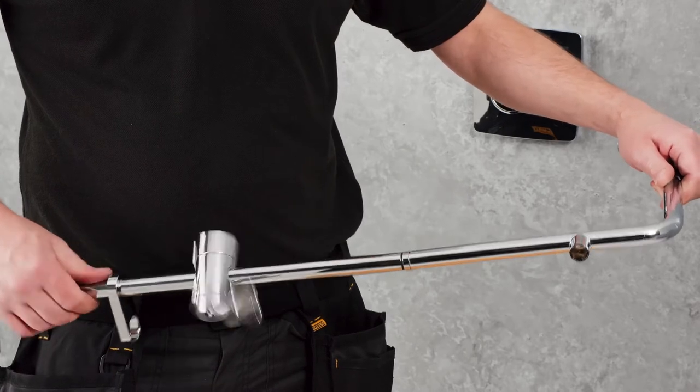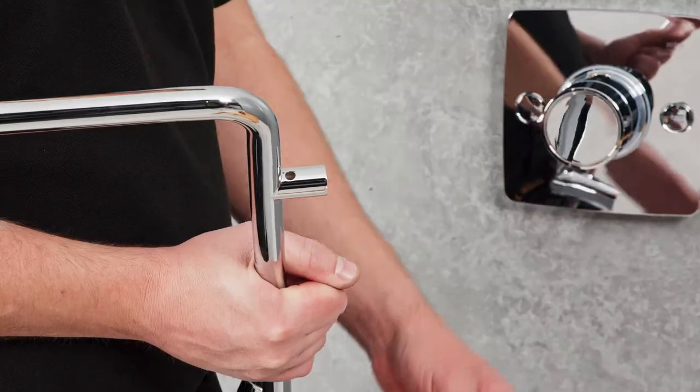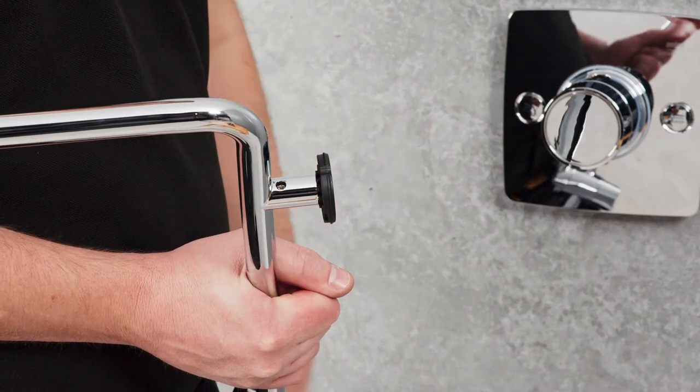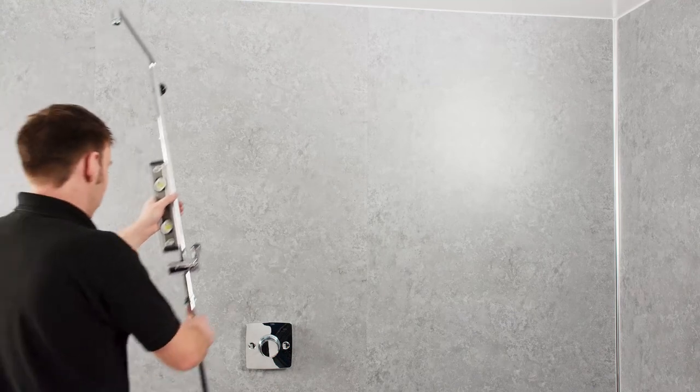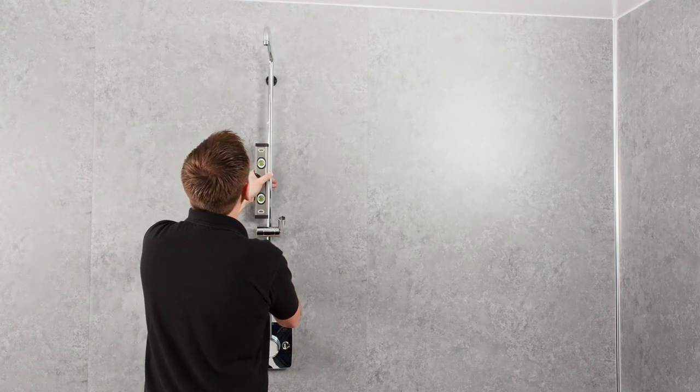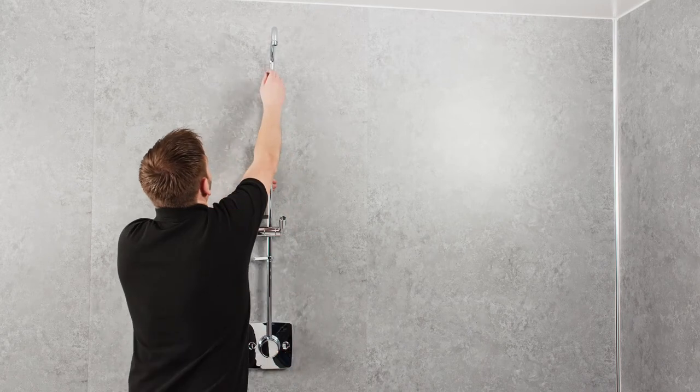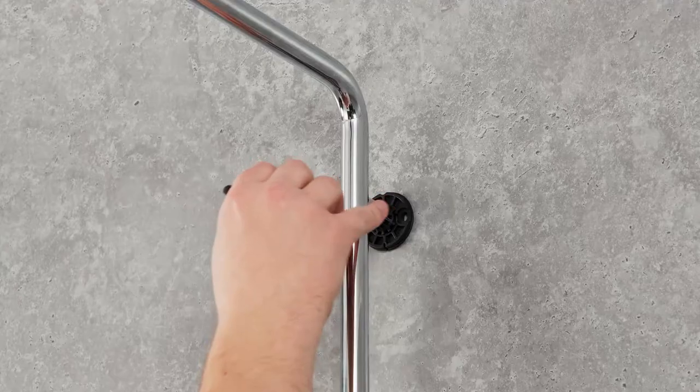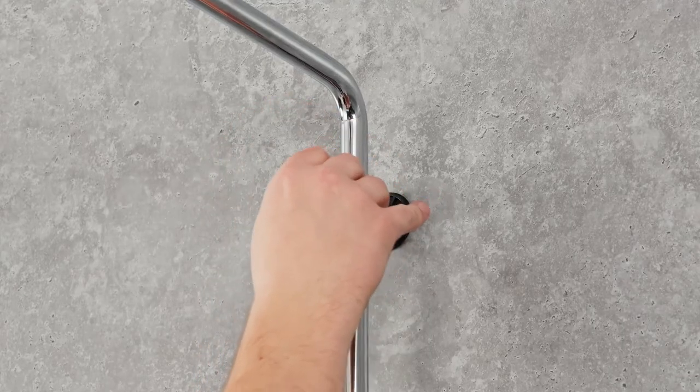The backplate assembly for the riser rail should be installed temporarily to mark the wall for fixing. This is tightened using the grub screw. Using a spirit level, the deluge assembly can then be held to the wall to locate the fixing points required for the backplate assembly. Take care to fully insert the rail assembly into the valve in order to obtain the correct reference points.